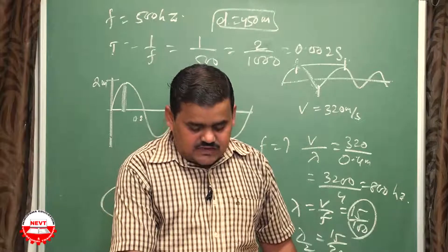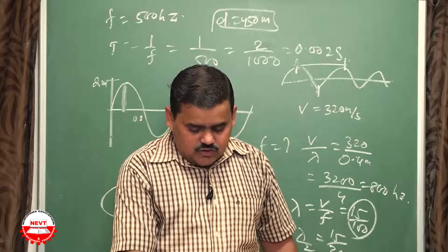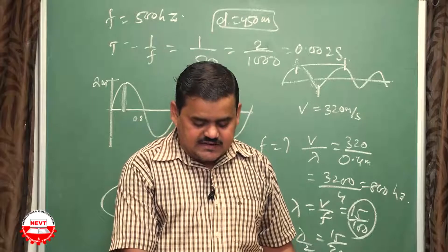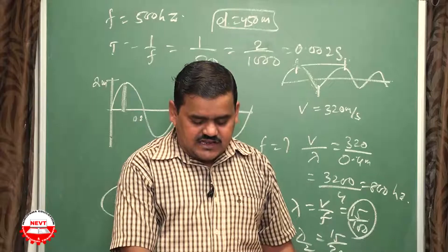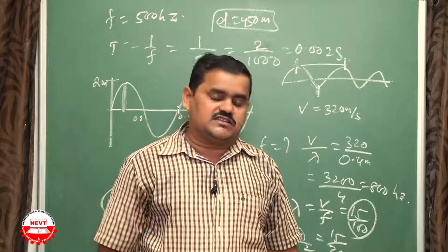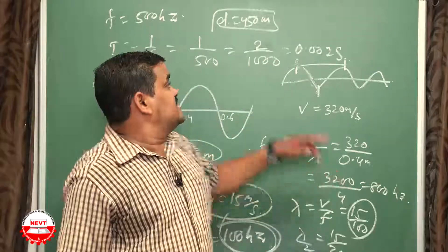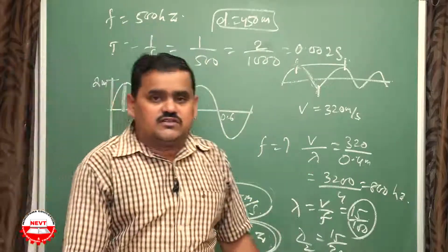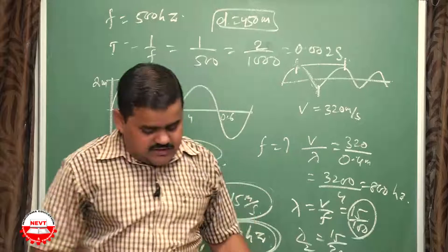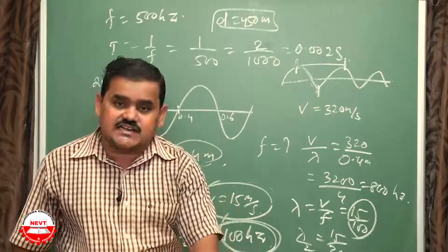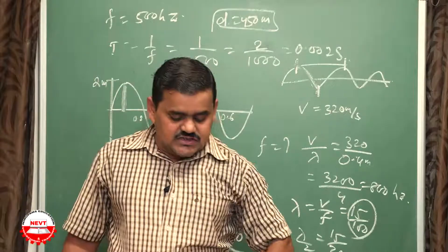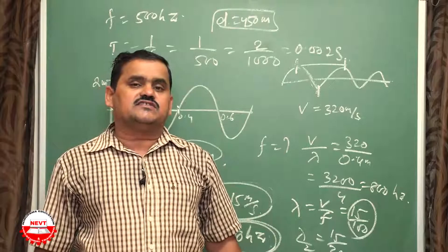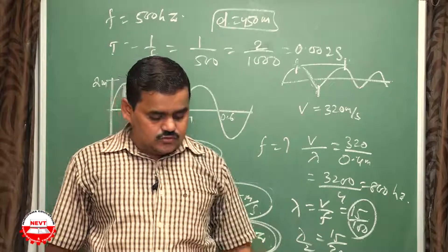A person produces a sound with a siren near a cliff and hears the echo after 6 seconds. Find the distance to the cliff if velocity of sound = 330 m/s. Using 2d = vt: distance d = v × t / 2.